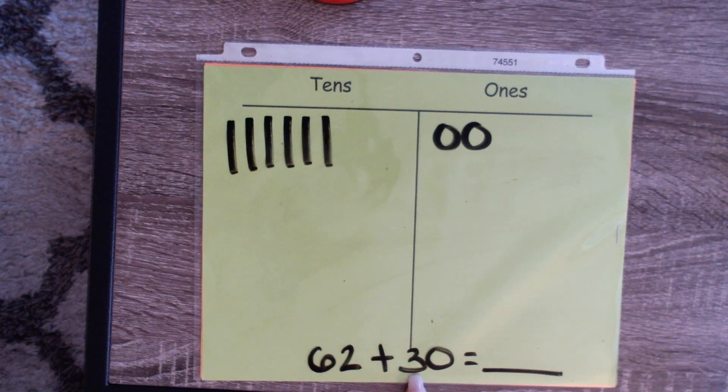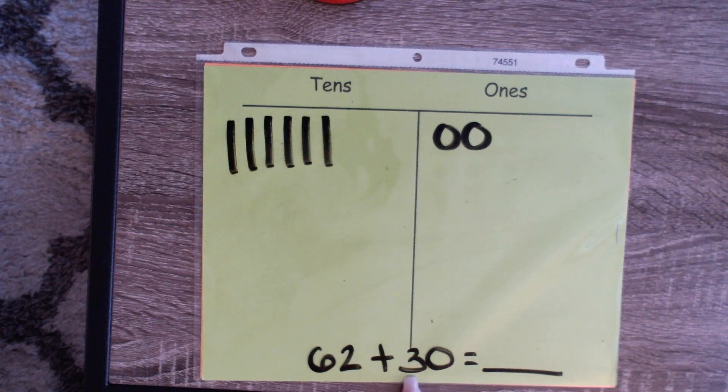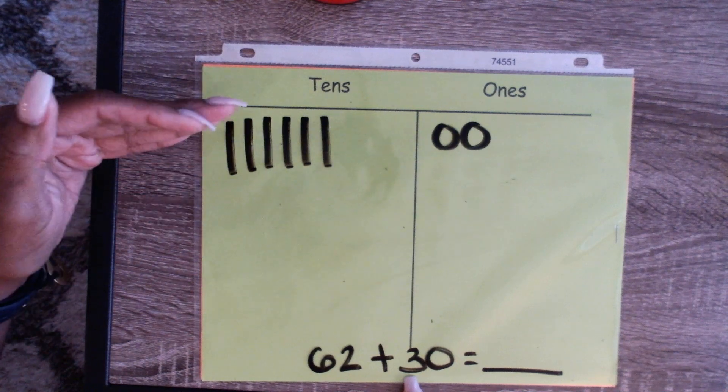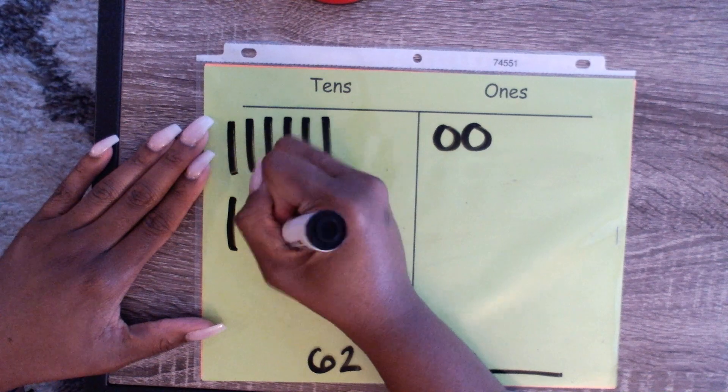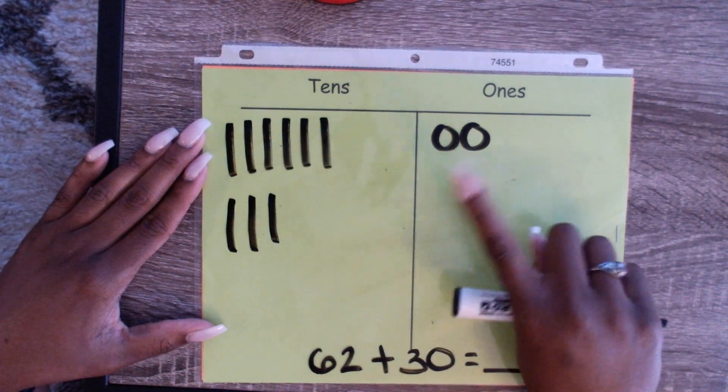Now we're going to add 30. We're going to add 3 tens because there's no number in the ones place. I like to add my new numbers underneath my previous ones so I can see what I did. I'm going to add 3 tens: one, two, three. Are we going to add any ones? Nope, because there are no ones in the ones place.